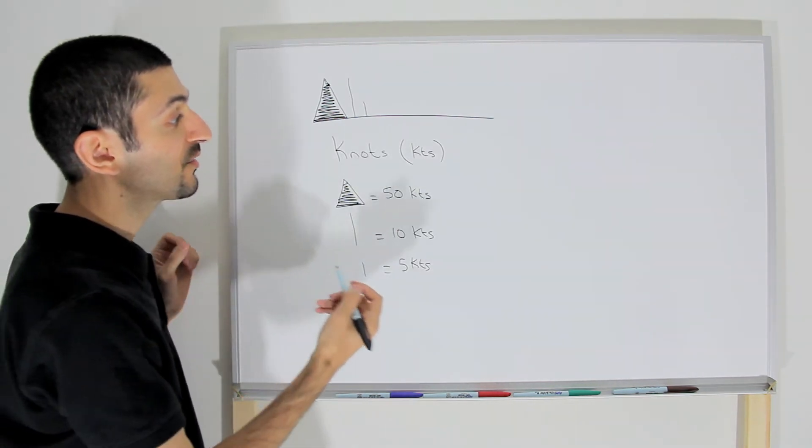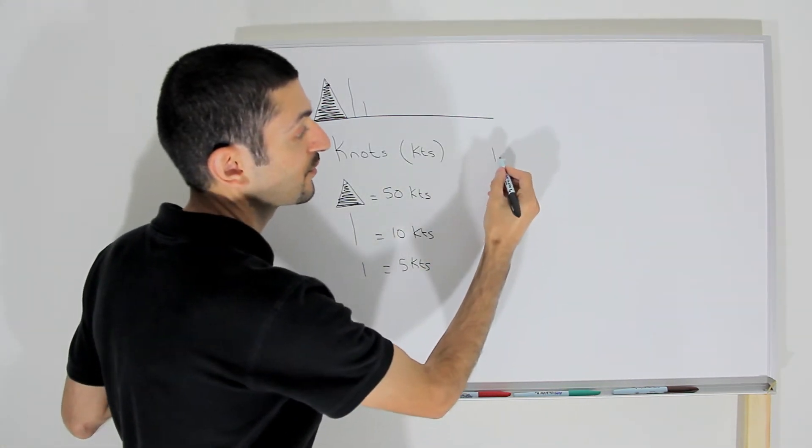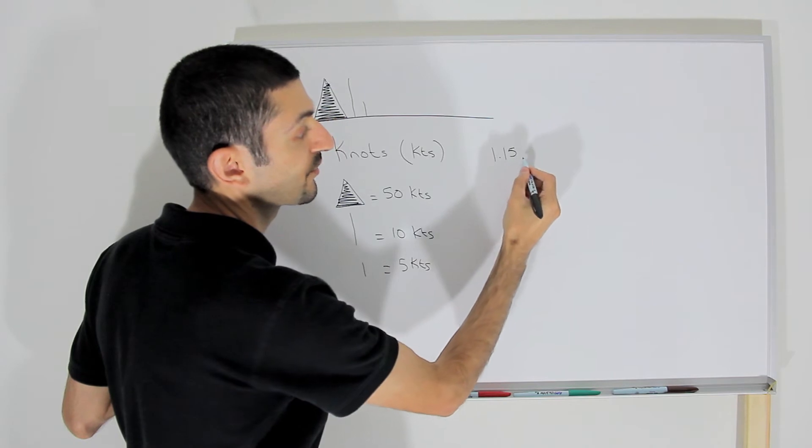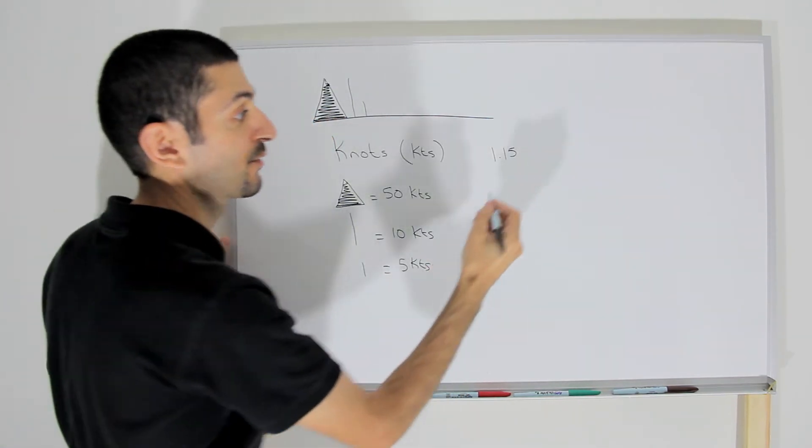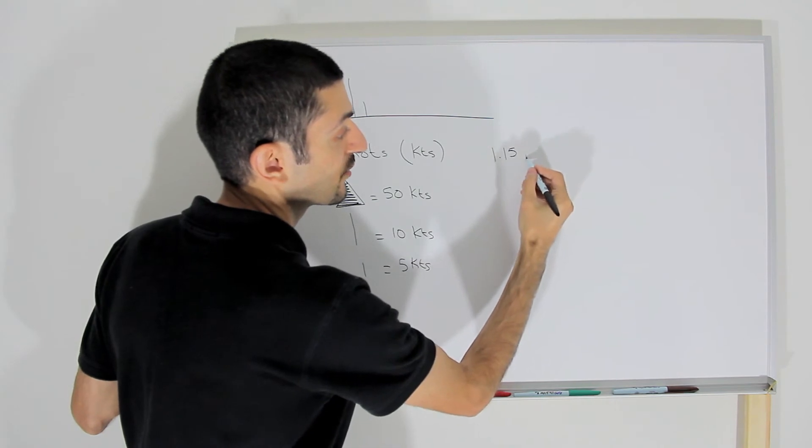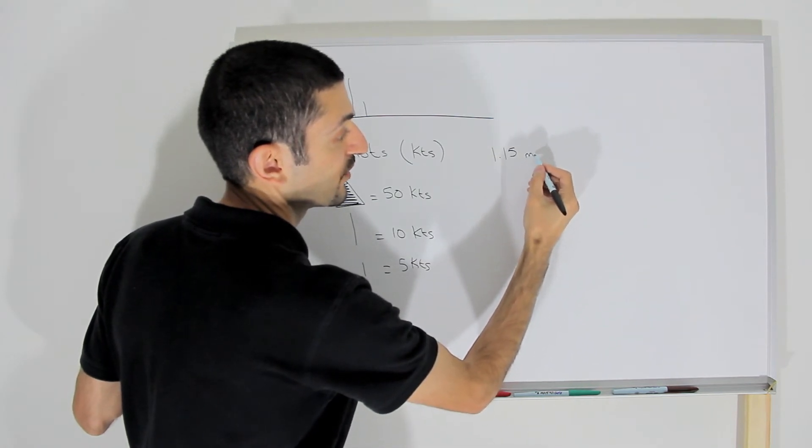Now each knot is 1.15 regular miles per hour or statute miles per hour. So one knot equals 1.15 miles per hour.